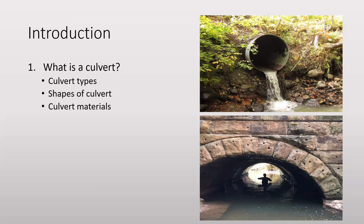Culverts can be classified into two major types. The first is a rigid culvert, where the structure is required to handle all the pressure loading from the surface traffic and the surrounding soils. The second culvert type is the flexible type, where the structure interacts with the surrounding soils to support the load requirements.